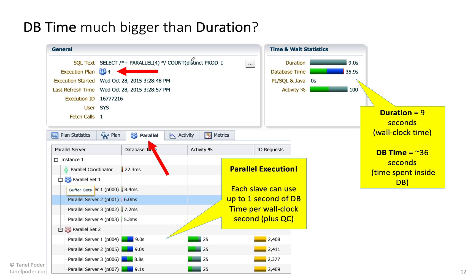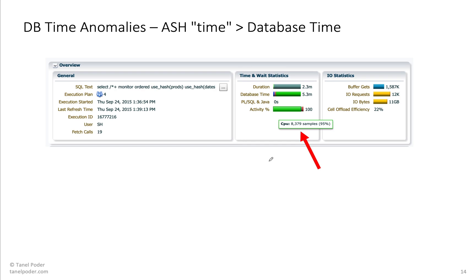Parallel query is the most plausible explanation because every parallel slave has its own session that can concurrently use CPU and I/Os. Here's a different example: the duration is two minutes and the database time is five minutes — that's fine because this is a parallel query. This data comes from V$SQL monitor, while the other comes from ASH.